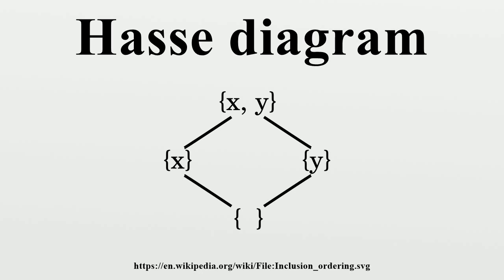However, finding a crossing-free Hasse diagram is fixed parameter tractable when parametrized by the number of articulation points and triconnected components of the transitive reduction of the partial order.